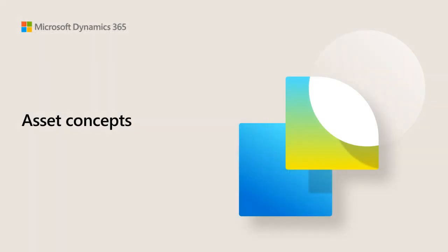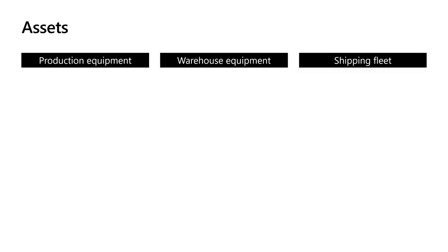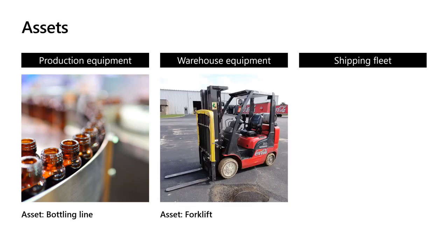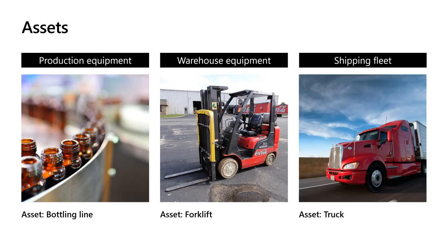Now that we understand a little bit about what asset management is and the related benefits, let's dig into the key concepts around assets. Starting with assets — assets are anything that we need to perform maintenance on, although typically we think of machines or machine parts. For production equipment, an example of an asset might be a bottling line in a bottling plant. For warehouse equipment, an asset might be a forklift. And in a shipping fleet scenario, we could model our truck as an asset. The key defining feature of an asset in this context is that it's something we need to service or maintain.